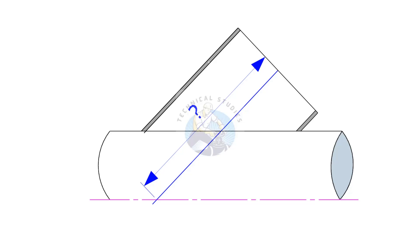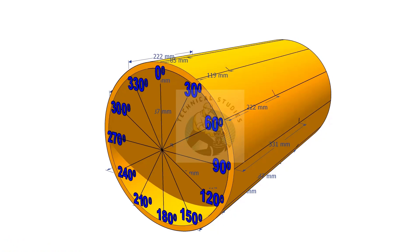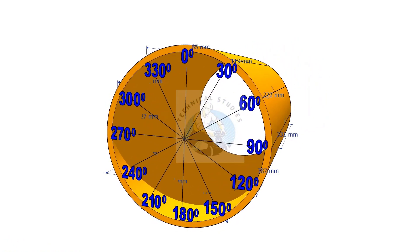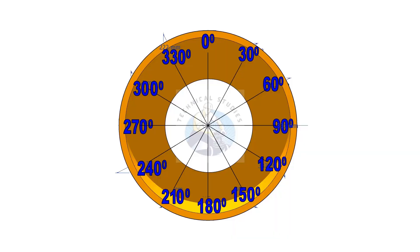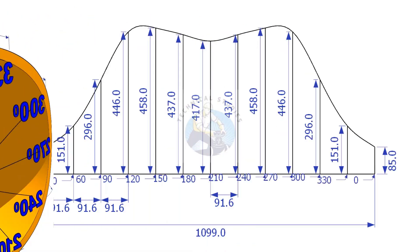Let us mark the layout dimensions on a pipe. Divide the pipe circumference into 12 equal parts and draw lines as shown. Mark the dimensions on the pipe according to the layout.